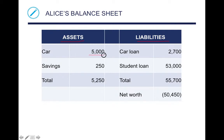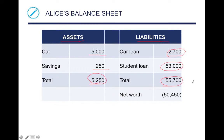On the balance sheet, assets are on the left and liabilities on the right. Alice's assets: she has a car worth five thousand dollars and two hundred and fifty in savings, for a total of five thousand two hundred and fifty. She does not own a house — she rented. Her liabilities: car loan of two thousand seven hundred and a student loan of fifty-three thousand, for total liabilities of fifty-five thousand seven hundred. So her net worth is negative fifty thousand four hundred and fifty. This doesn't necessarily mean she's going to go into bankruptcy — it just means she does not have a surplus of net worth.